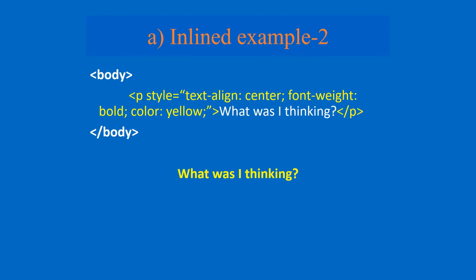Then again the semicolon. Then color - color is the font color or text color, that is the property. Color, colon, yellow, then semicolon, close the double quotes. And then whatever your statement is there, that statement, then close the paragraph tag. So once you run this kind of CSS, you can see the statement is coming a little bit bold, the color will pick yellow, and all of the statement is in the center of your webpage. This is how you can add inline CSS.